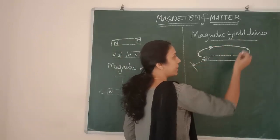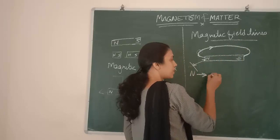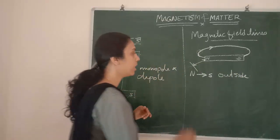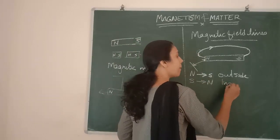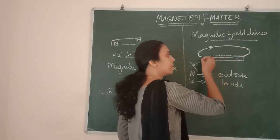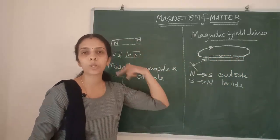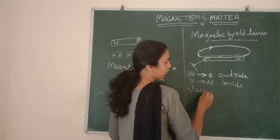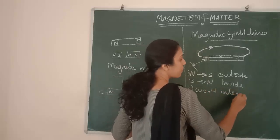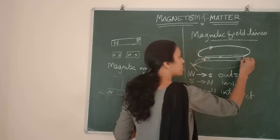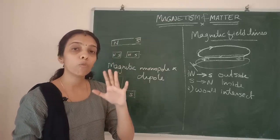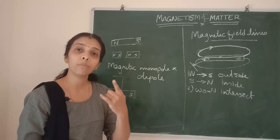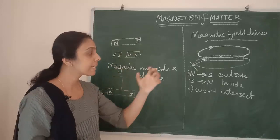Magnetic Field Lines will be moving from North to South outside the Magnet, and from South to North inside the Magnet. It will be a closed curve. Another property is it won't intersect — many magnetic lines will be there from North to South Pole but they won't intersect each other. If they are intersecting, the meaning is that it is having more than one direction at a single point, which is not possible.